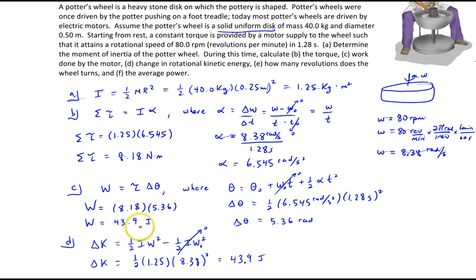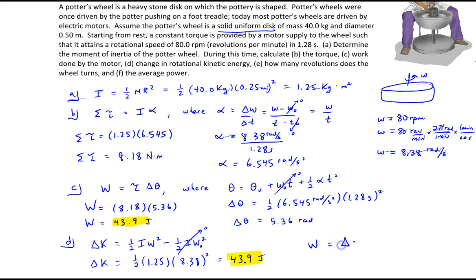The work done and the change in kinetic energy are identical — both 43.9 joules — which makes sense because of the work-energy theorem: W equals the change in kinetic energy. The motor did 43.9 joules of work, and the wheel gained 43.9 joules of rotational kinetic energy.